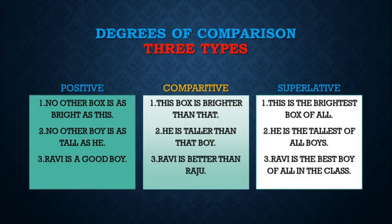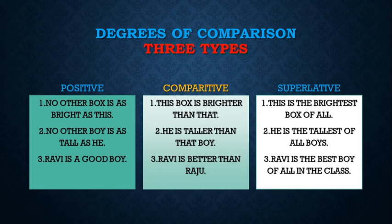Now let us see degrees of comparison. There are three types of degrees: positive, comparative, and superlative. In the positive: no other box is as bright as this. In the comparative: this box is brighter than that. In the superlative: this is the brightest box of all.